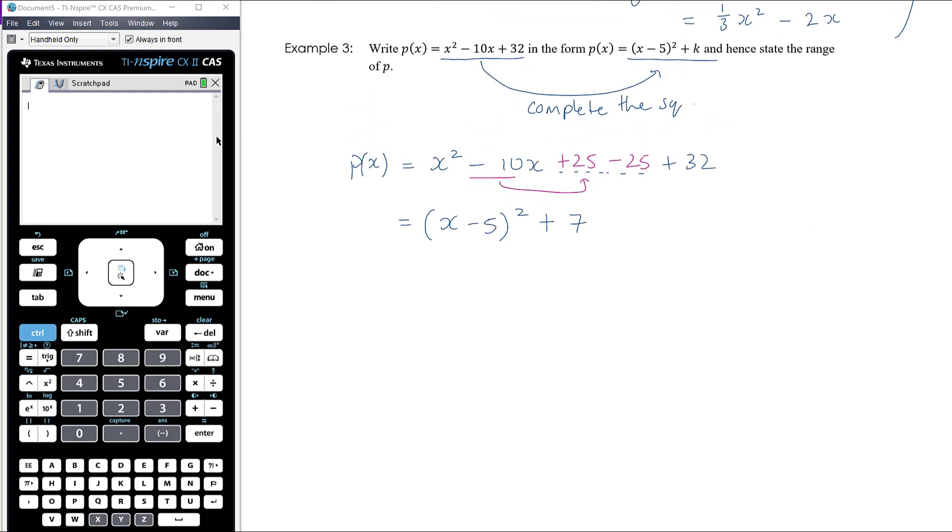It asks us, the first bit was to write p(x) in that form, so we've done that. That's the first part; k is essentially 7. But again, answering the question, the question doesn't say find the value of k; the question says write p(x) in this particular form, so we've done that. And hence, so use this particular form to state the range of p.